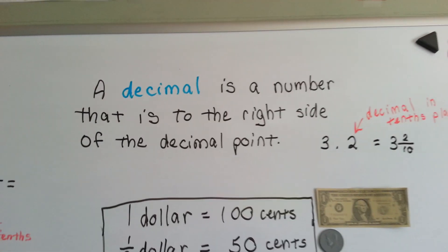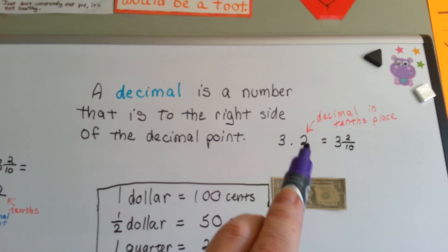A decimal is a number that is to the right side of the decimal point. See, that's two tenths.